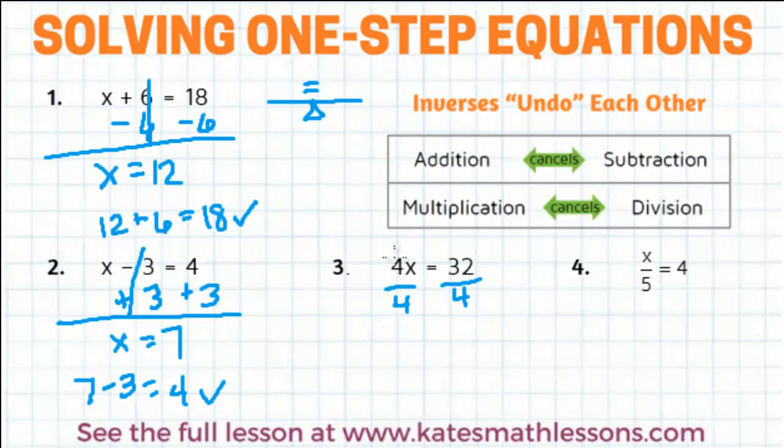So multiplying by 4 and dividing by 4, those cancel out, so it's just an x left over. And then 32 divided by 4 is 8.